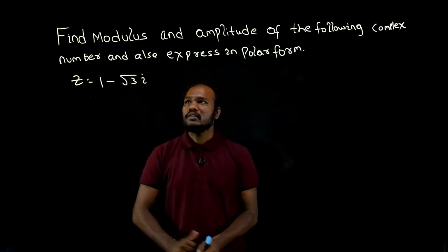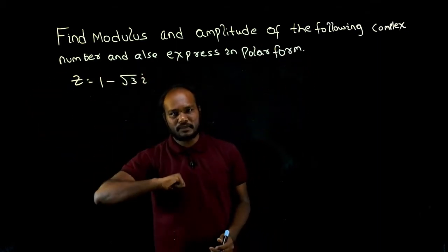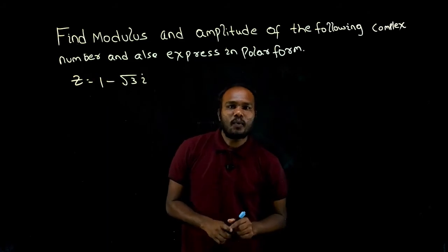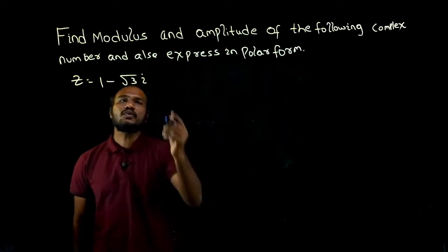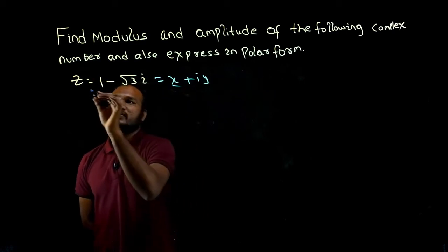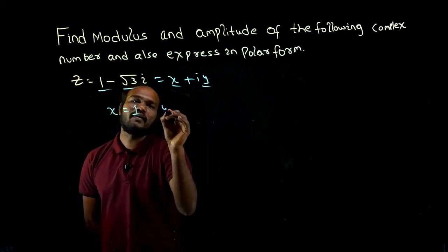What is given in the question? We have to find the modulus and amplitude of the following complex number and also express it in polar form. What do we need to do first? We need to compare this with x plus iy. So I can write x value as 1 and y value as minus root 3.